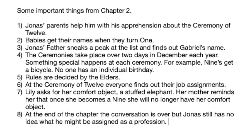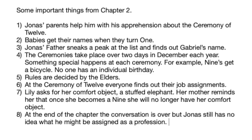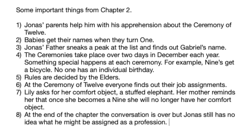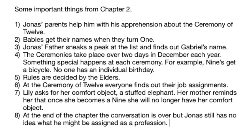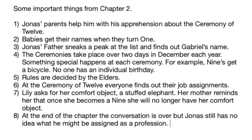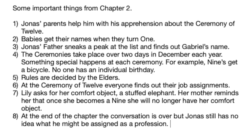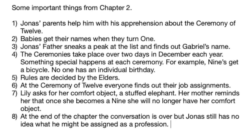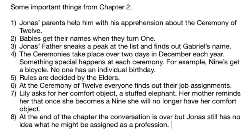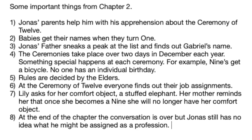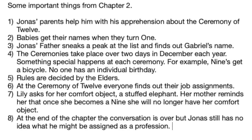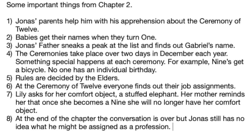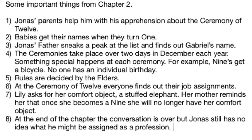Some important things to remember from Chapter 2. Jonas' parents were helping him with his apprehension about the ceremony of 12. We heard his dad's recalling of his own ceremony and what he felt, and some of the other people that were receiving their jobs that year. He wasn't surprised by his assignment and explained why. We learned that babies get their names when they turn one, and there are 50 of them assigned to families. Jonas' father sneaks a peek at the list and finds out Gabriel's name — they call him Gabe. The ceremonies take place over two days in December each year, and something special happens at each ceremony. The nines get their bicycle, and no one has individual birthdays — the ceremony is the birthday for everyone. We learned that rules are decided by the elders, and at the end of the ceremony of 12, everyone finds out their job assignments — that's what's making Jonas apprehensive.